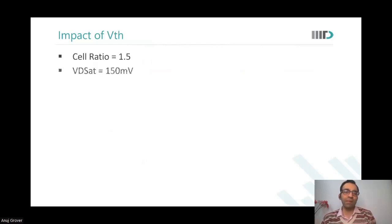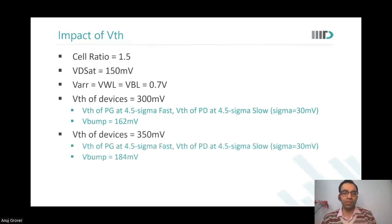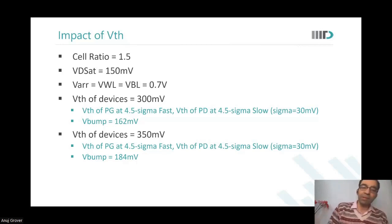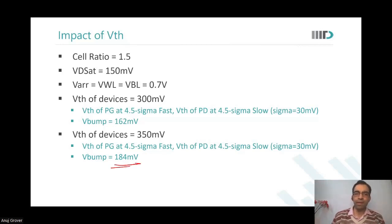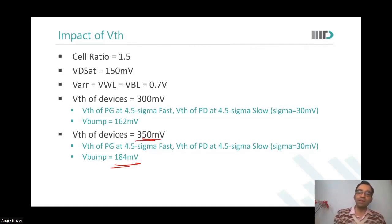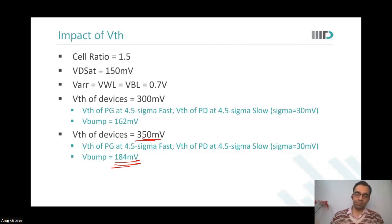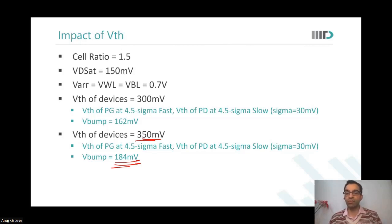If we add mismatch in the presence of high-VT devices — memory arrays are usually designed with high-VT devices to reduce leakage — V bump increases further. With high-VT devices, the effect and impact of mismatch is even higher.